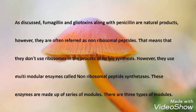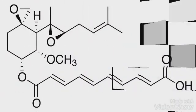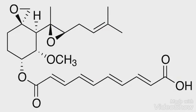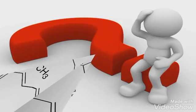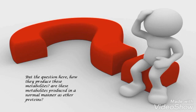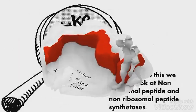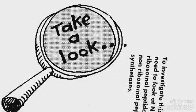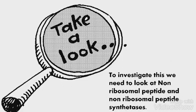These enzymes are made up of a series of modules. There are three types of modules. The question here is: how are these metabolites produced? Are they produced in a normal manner like other proteins? To investigate this, we need to look at non-ribosomal peptides and non-ribosomal peptide synthetases.